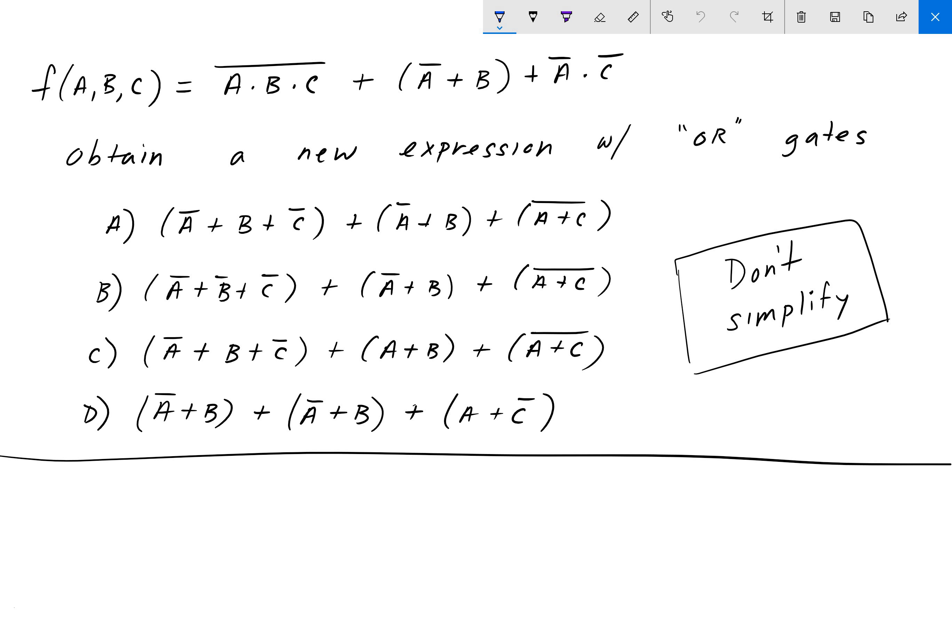Hey guys, welcome back to Engineering Education. For this next problem we are given a Boolean expression. So f(A,B,C) is equal to ABC' plus (A' plus B') plus A' times C'.